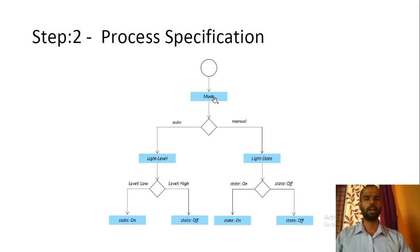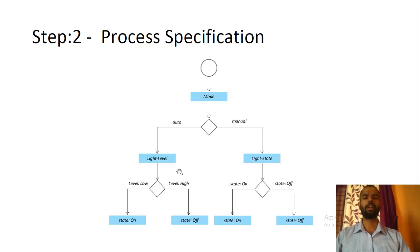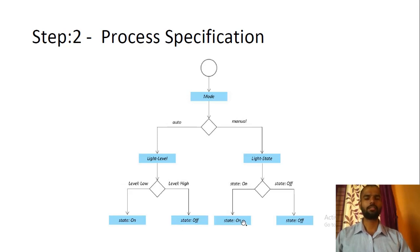The system operates in two modes: auto mode and manual mode. In auto mode, we are measuring the light level. If the light level is low then the light will be automatically switched on, and if the light level is high then the light will be automatically switched off. In manual mode, we are tracking the state set by the user. If the user sets the state as on then the system state will also be on, and if the user sets the state as off then the system will also treat the same state as off.